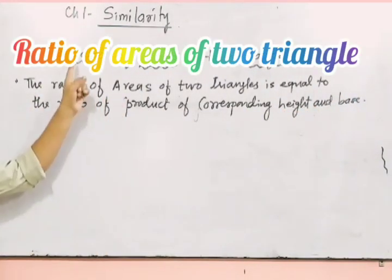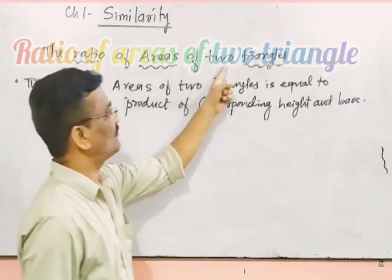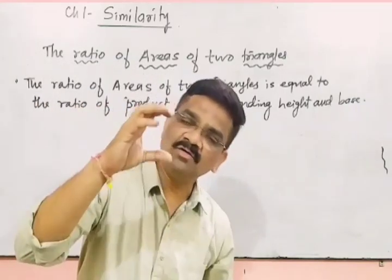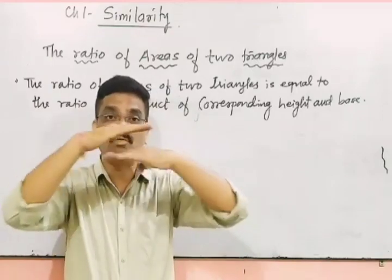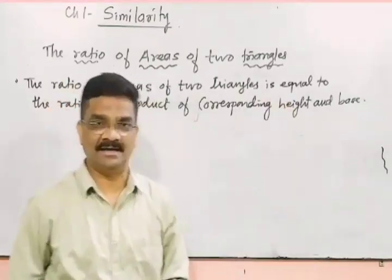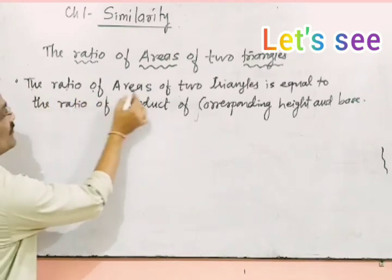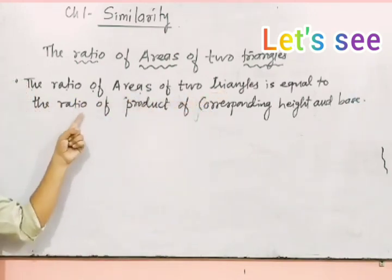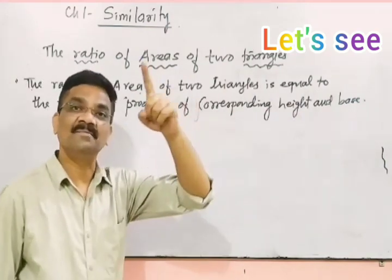First topic is Chapter 5. What is the first topic? The ratio of areas of two triangles is equal to the ratio of product of corresponding height and base.